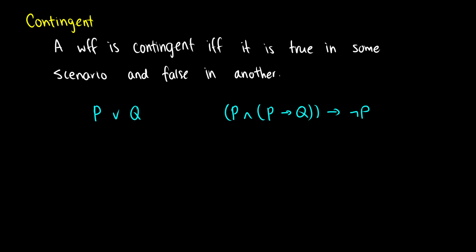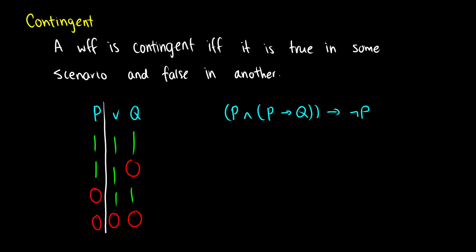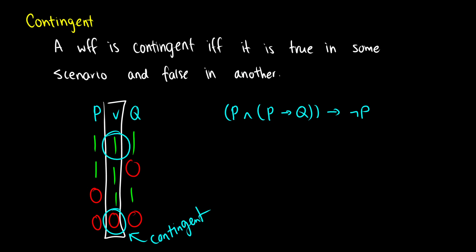Basically we see a one and a zero somewhere in that final column. If we set up the truth table for p ∨ q — we've done this a few times — it's true if at least one of those are true. So it's true in the first three rows and false in the last. Because we see at least one one and at least one zero, this is contingent — it's contingent on the inputs, whether p or q is true or false, that's what determines whether the WFF is true or false.